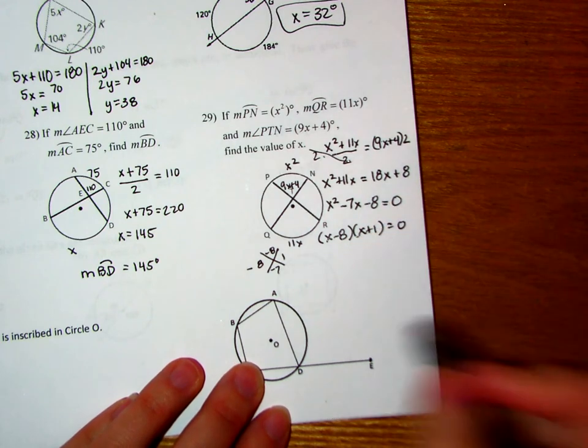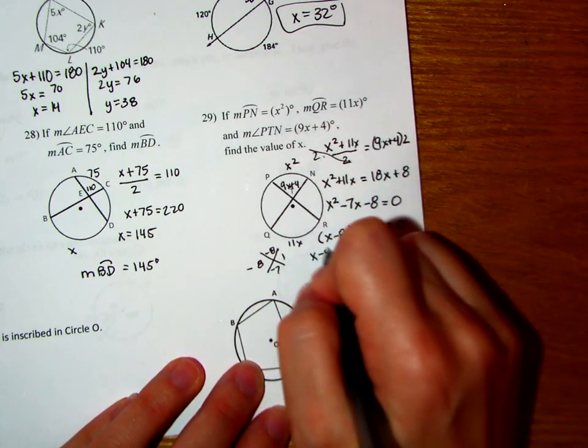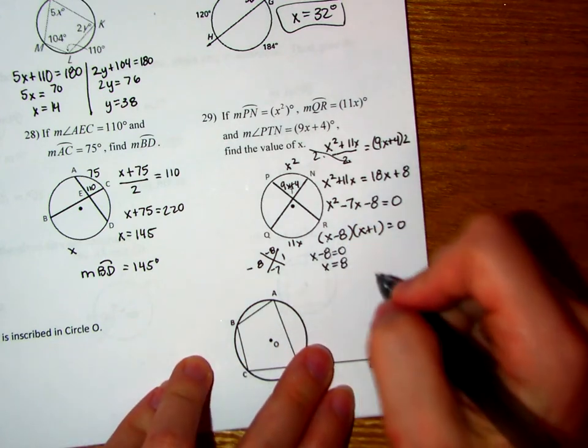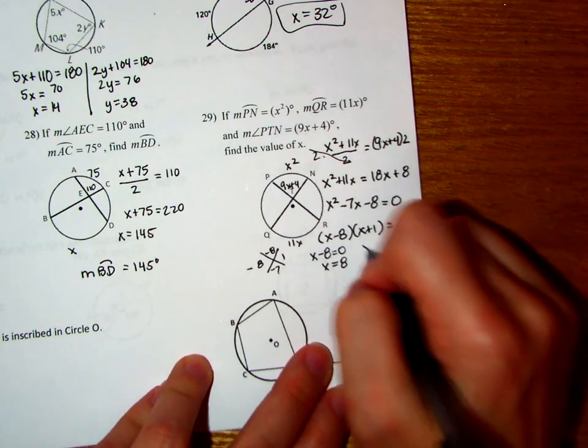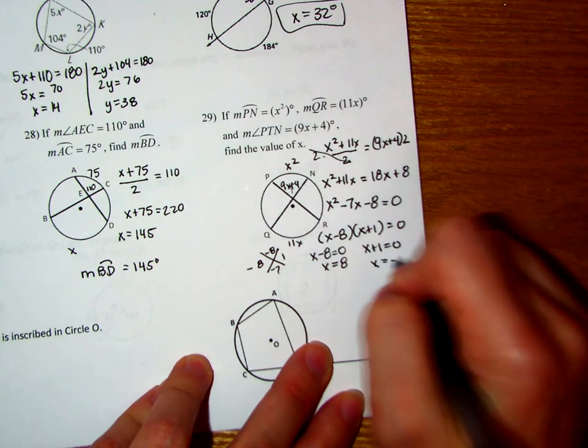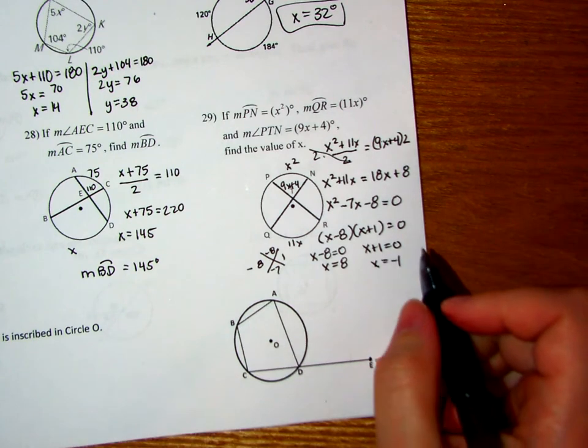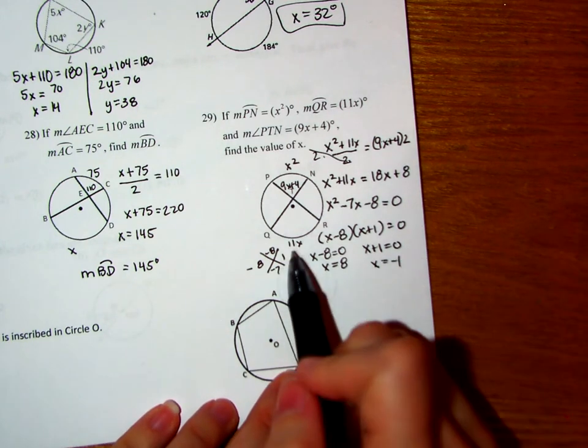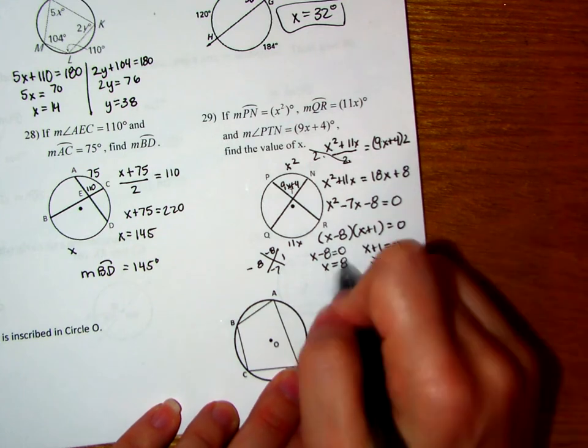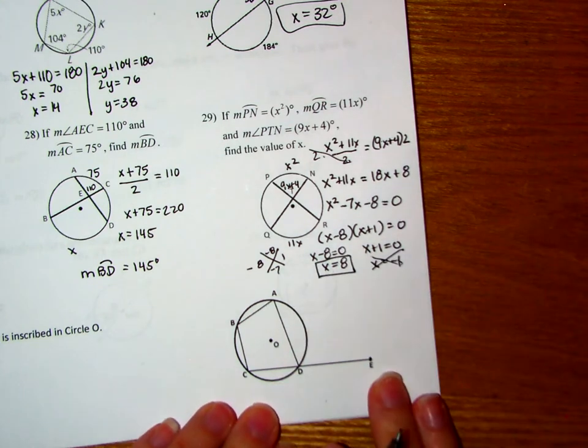Now we're going to solve both of these. So X minus 8 equals 0, so X has to equal 8. When we add 8 to both sides, X plus 1 equals 0. So when I subtract 1 from both sides, X is going to equal negative 1. Now let's look and see if we can put a negative 1 in there to see if it makes sense. If I put a negative 1 in here, that makes this a negative 11, which is not possible. So this answer is out, but we can keep the positive answer. That one will be fine.